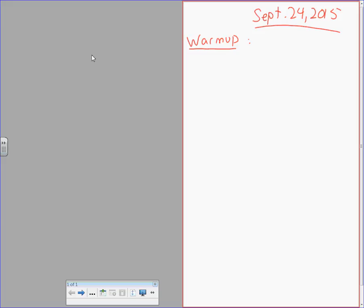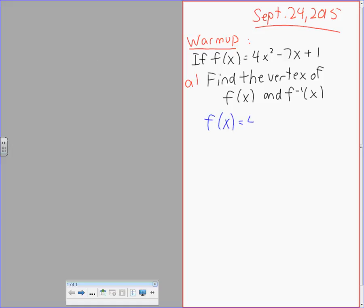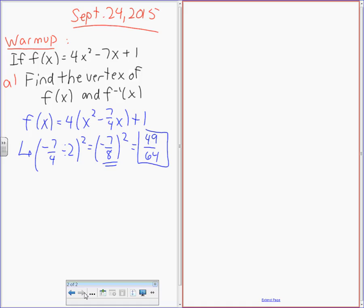Warm-up. We're going to say if f of X equals 4x squared minus 7x plus 1. Part A: Find the vertex of f(x) and f inverse of x. I'm going to run through this as quickly as I can because we've seen lots of these. So f of X is equal to 4 bracket X squared minus 7 over 4X plus 1. So that changes into negative 7 over 4 divided by 2 squared, which is negative 7 over 8 squared, which is 49 over 64.